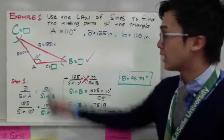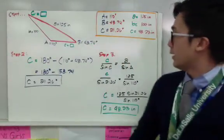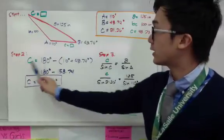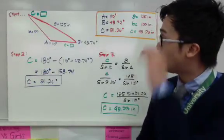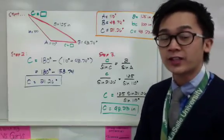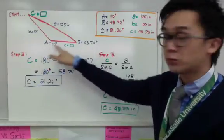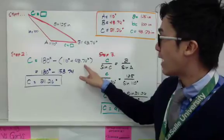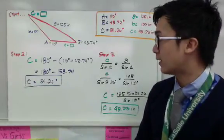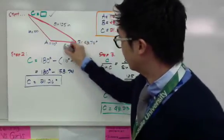Now we are only missing angle C and side c. For the second step, we find angle C — and this is the easiest part to find once we have two angles. Using the theorem that the sum of interior angles of any triangle equals 180 degrees, we have 180 minus the sum of the two known angles: 110 plus 48.74 equals 158.74. So angle C equals 180 minus 158.74, which is 21.26 degrees — without even using a scientific calculator.